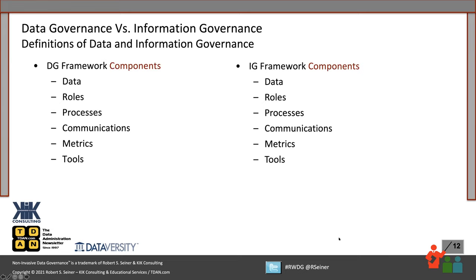In the data governance framework, the components are data, roles and responsibilities, processes, communications, metrics, and tools — all of those things need to be governed. Now let's look at that from an information governance perspective. The data is both unstructured and structured data, but we have the same components. We really don't need to change a thing. The disciplines may be very similar. What we call the roles may be a little bit different, but we still have the same components: data, roles, processes, communications, metrics, and tools.